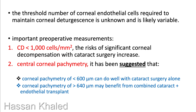The threshold number of corneal endothelial cells required to maintain corneal clarity is unknown and likely variable. An important preoperative measurement is cell density: when less than 1,000 cells per millimeter square, the risk of significant corneal decompensation with cataract surgery increases. Central corneal pachymetry has been suggested as follows: less than 600 microns can do well with cataract surgery alone, while more than 640 microns may benefit from combined cataract and endothelial cell transplant.